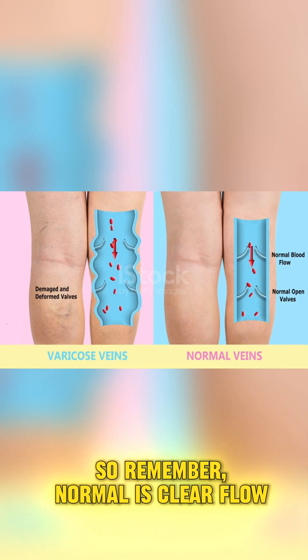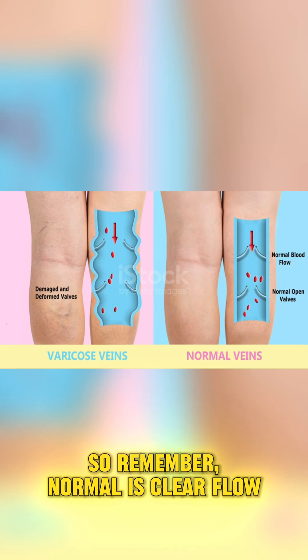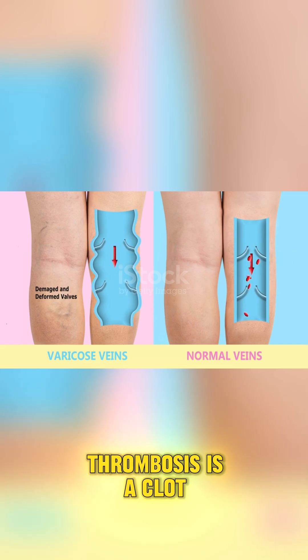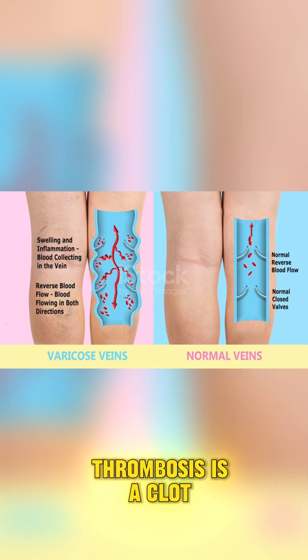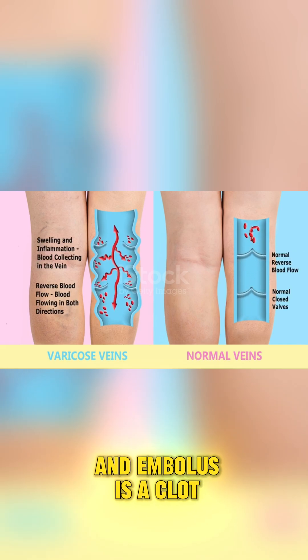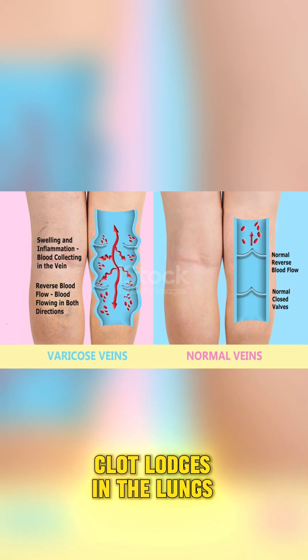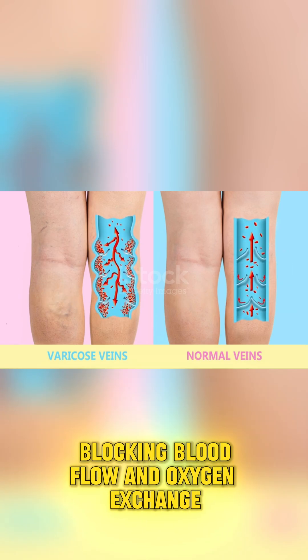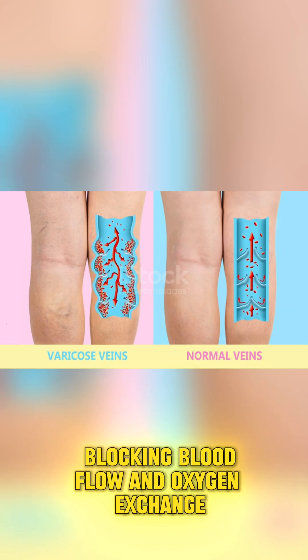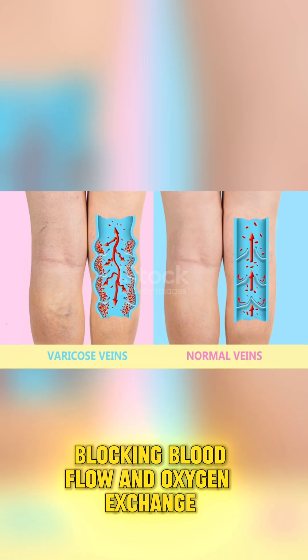So remember: normal is clear flow. Thrombosis is a clot. An embolus is a clot on the move. The moving clot lodges in the lungs, blocking blood flow and oxygen exchange.